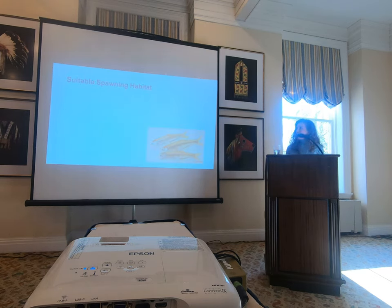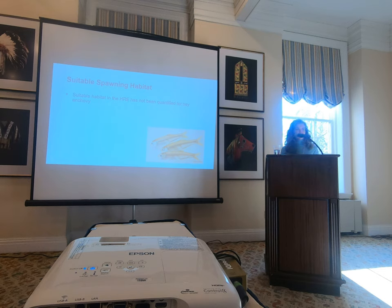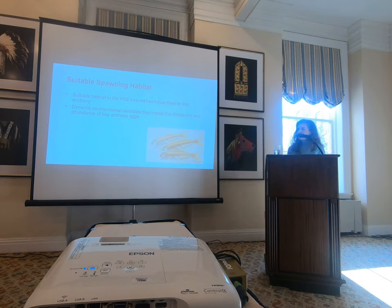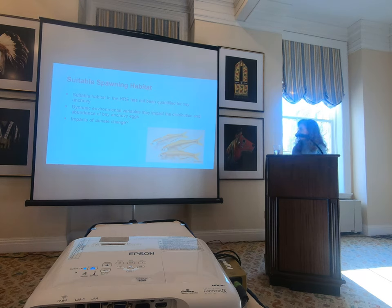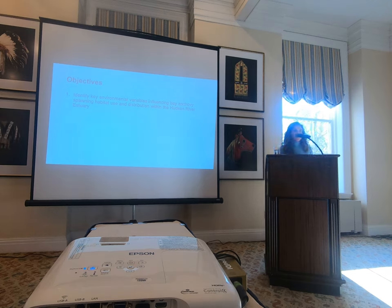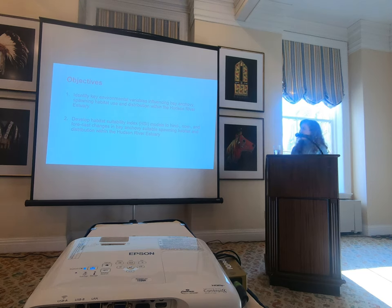Going into suitable spawning habitat: this has not been quantified for Bay Anchovy. As a species, they've been a little overlooked. Dynamic environmental variables are going to impact the distribution and abundance of Bay Anchovy eggs and dictate where adults are spawning, and of course there are potential impacts of climate change. The two objectives of the study are to identify the key environmental variables influencing Bay Anchovy suitable spawning habitat use and distribution within the Hudson River estuary, and to develop habitat suitability index models to hindcast and forecast changes in suitable habitat and distributions in the estuary.